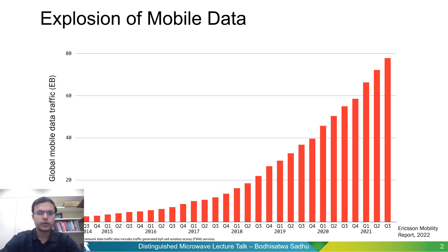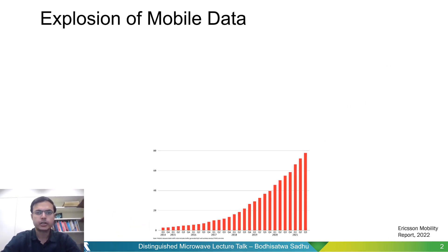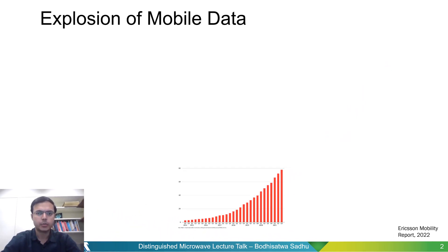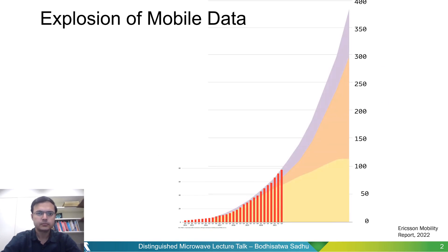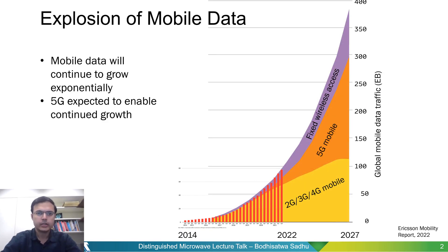If we extrapolate from this exponential, as predicted by the Ericsson Mobility Report this year, we expect an almost 5x further increase in mobile data traffic in the next five years, maybe even more. The burden of this demand will have to be carried by newer technologies as LTE runs out of steam, and this is where 5G mobile comes in.